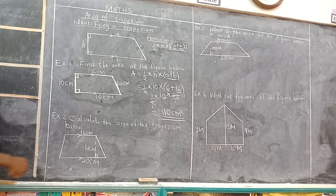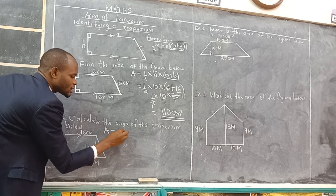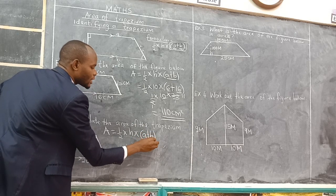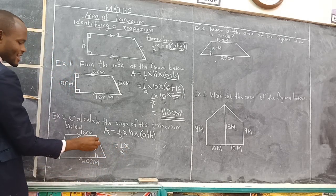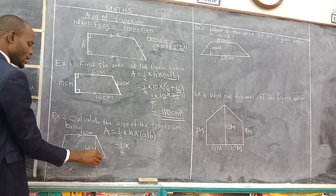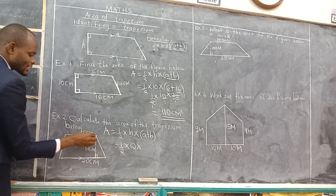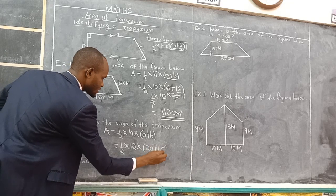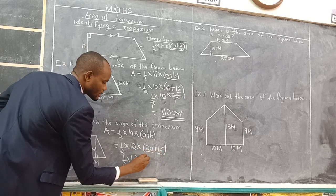Example number 2: Calculate the area of the trapezium below. This time you have been told it is a trapezium. So the area of the trapezium is half times height times the sum of the two parallel lines, A plus B. The height is the length joining the two parallel lines at 90 degrees, which is 12. The two parallel lines are 20 and 16, so you add 20 plus 16.